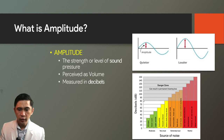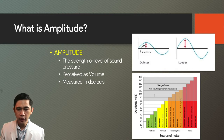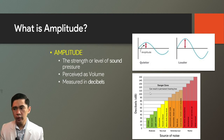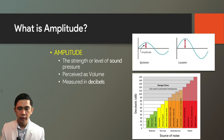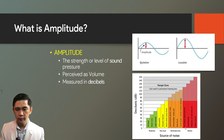From this chart, we can see that at 80 decibels it is already harmful to our ears and can result in permanent hearing loss. Those exposed to 120 decibels and above will experience pain when hearing it.